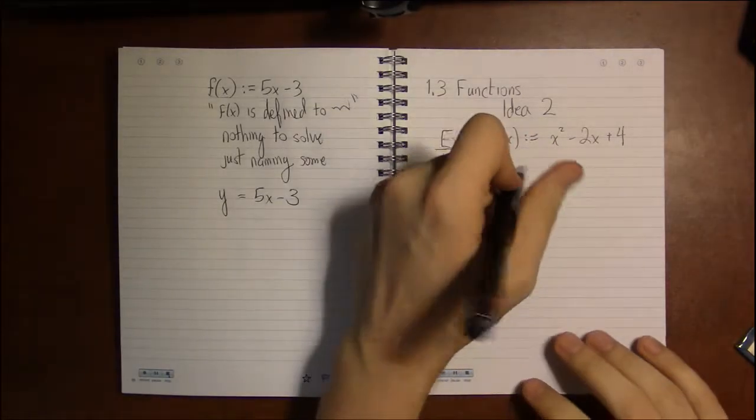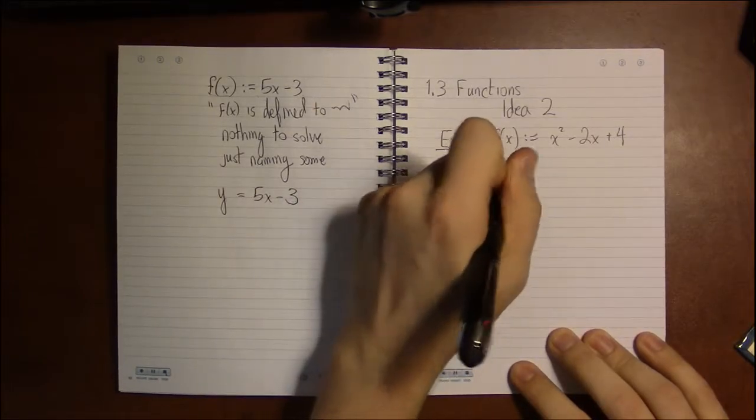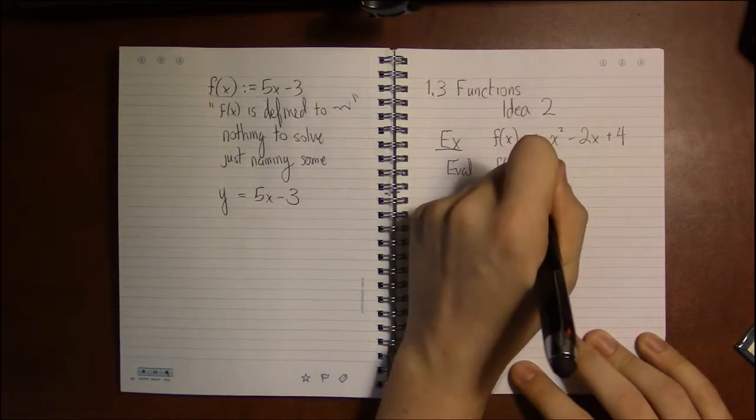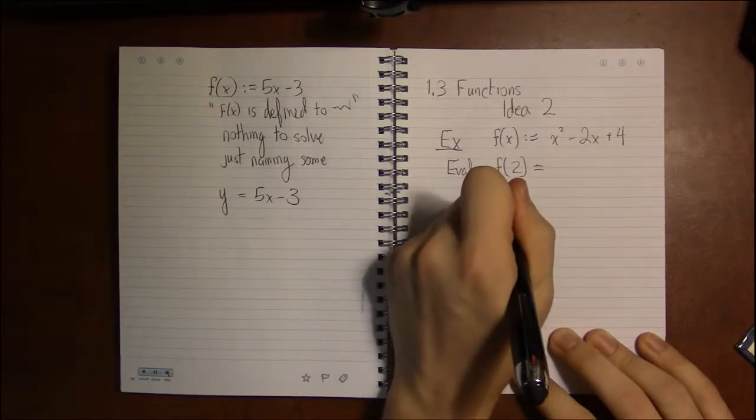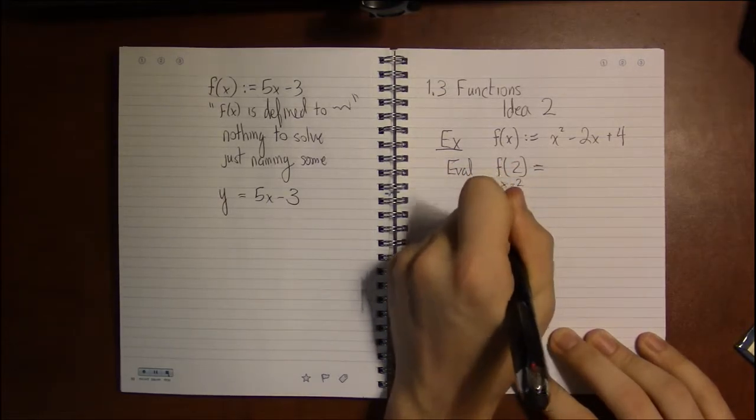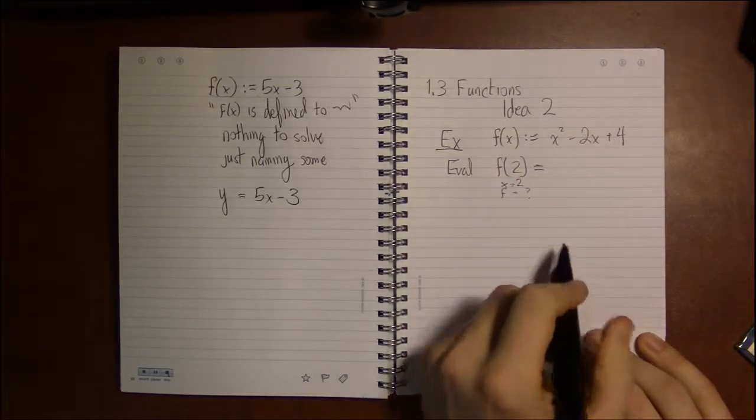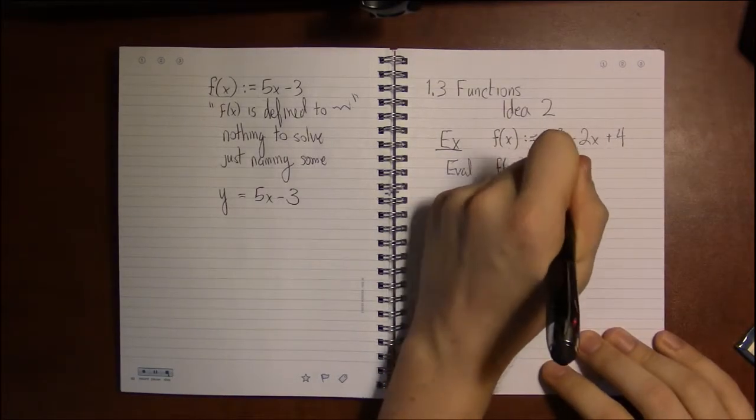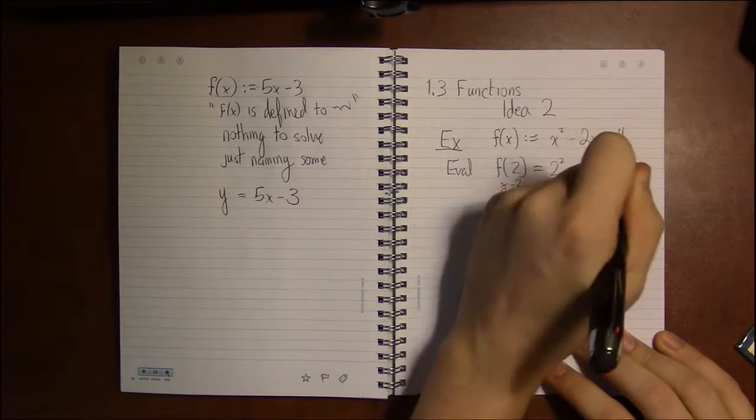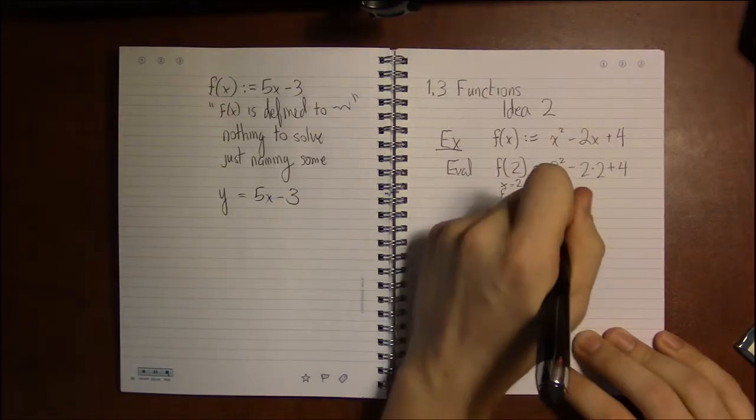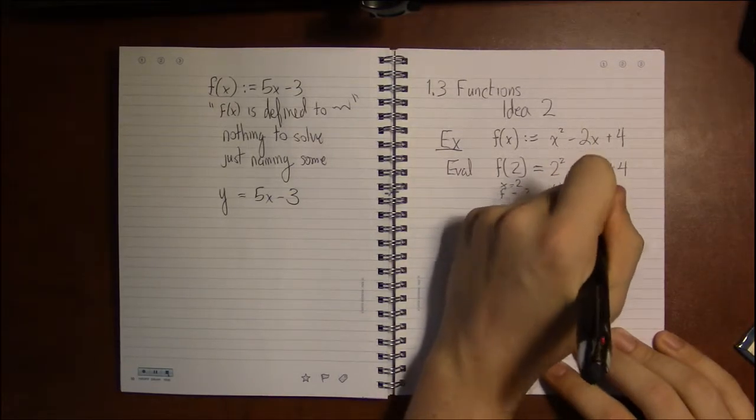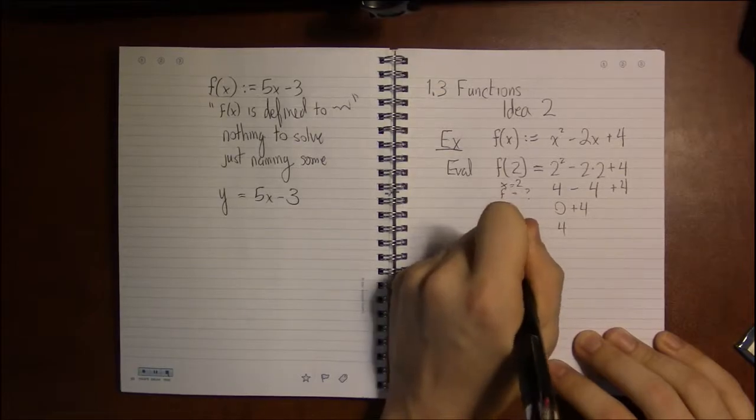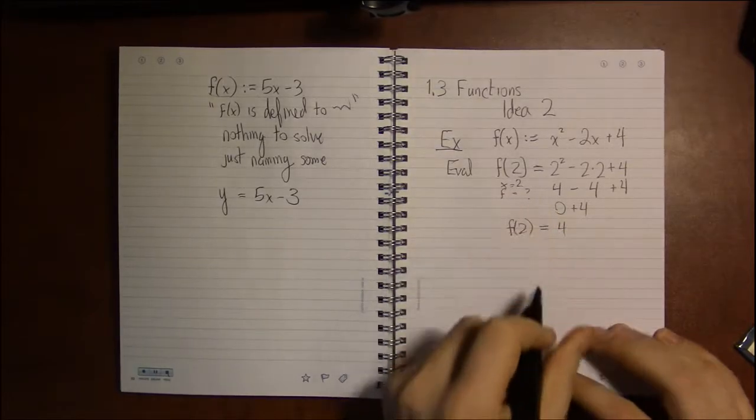I'm going to say we have a function f(x) = x² - 2x + 4. And what I want to do is evaluate the function at different points. So this is telling me that when x is 2, f is something. So if I plug 2 in for x, I get 2² - 2(2) + 4. Well that's 4 - 4 + 4, that's just going to be 0 + 4 or 4. So f(2) = 4.